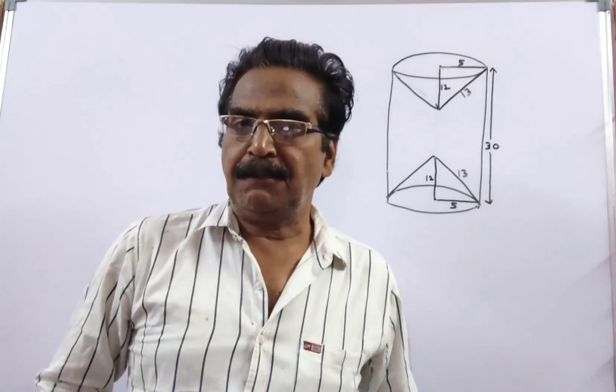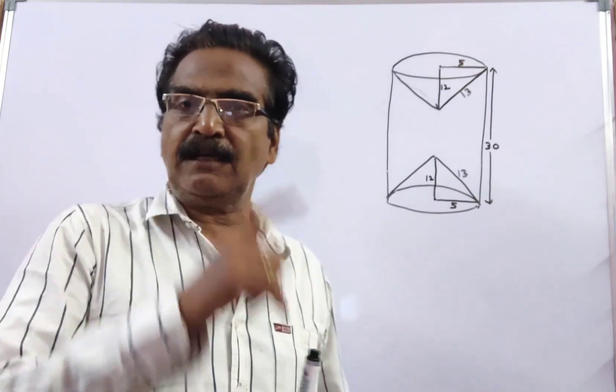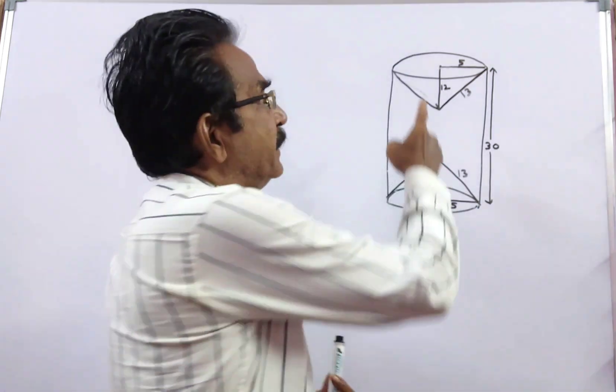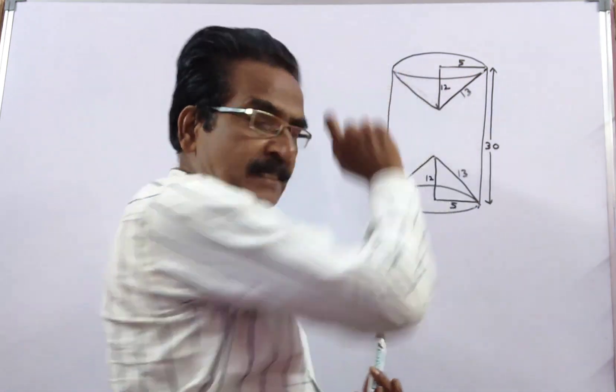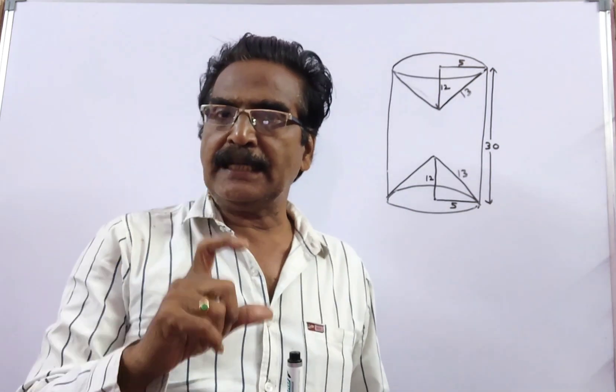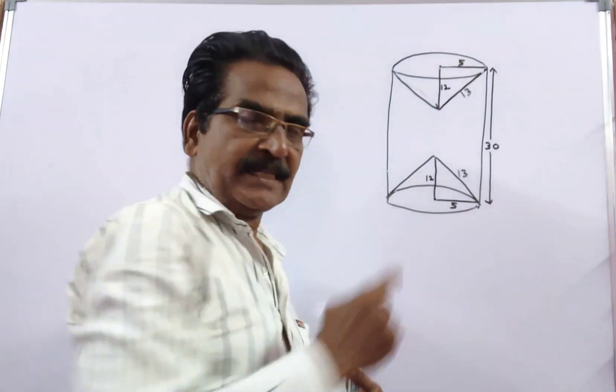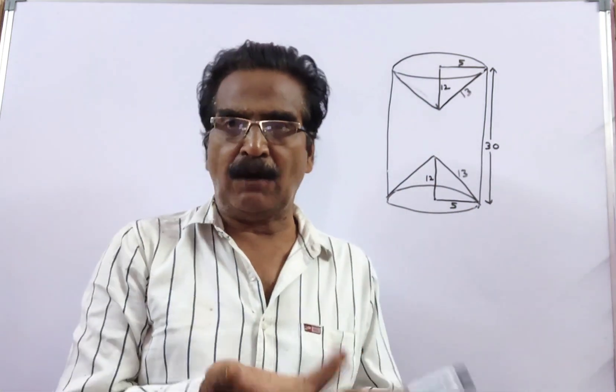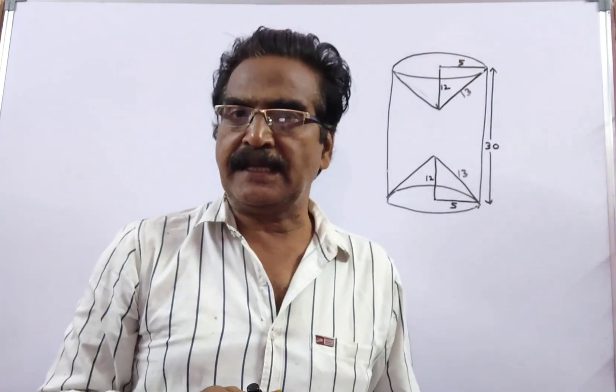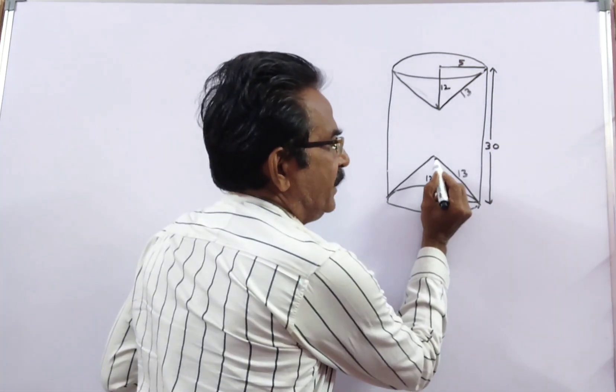Hi friends, good morning. Please look at the next problem in mensuration. The height of a solid cylinder is 30 centimeters and diameter 10 centimeters. Now two identical conical cavities of height 12 centimeters and radius 5 centimeters are drilled out. The question is: what is the surface area of the remaining solid?